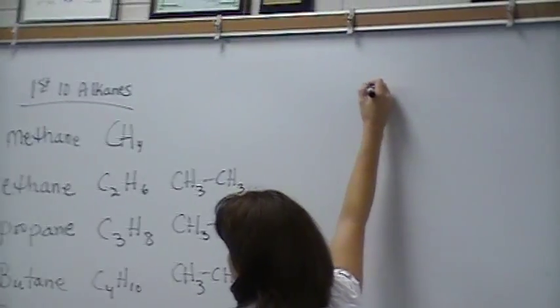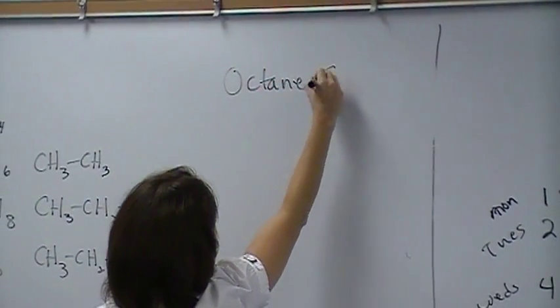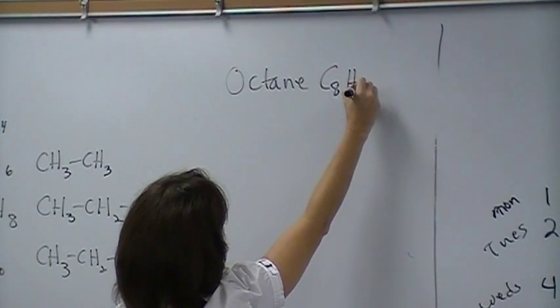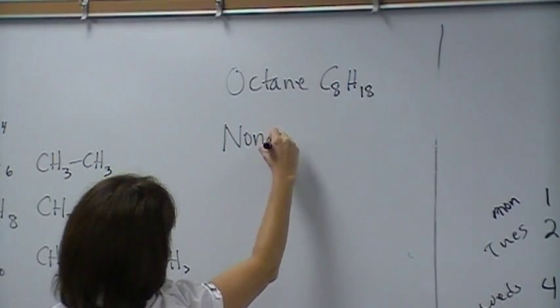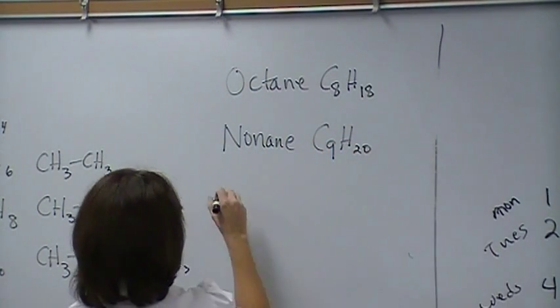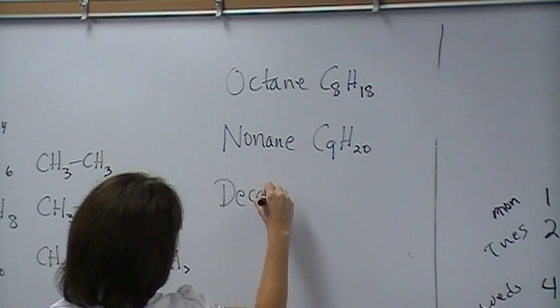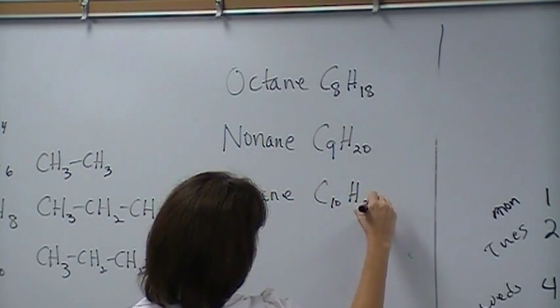If it's got eight, what do you think it's called? Octane, C8H18. With nine it's called nonane, C9H20. And with ten it's called decane, C10H22.